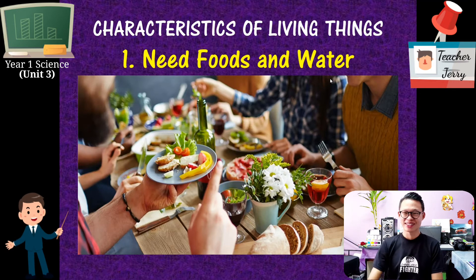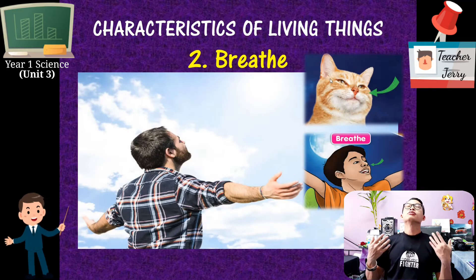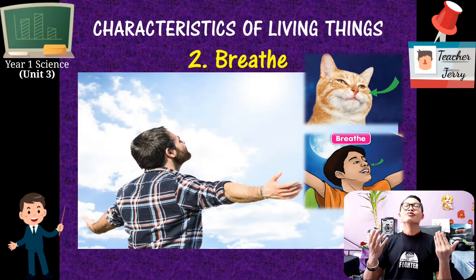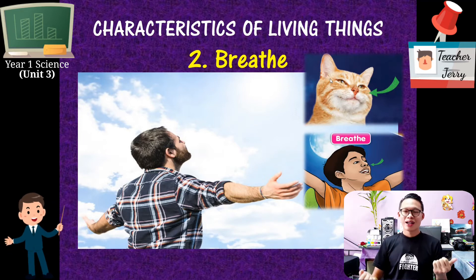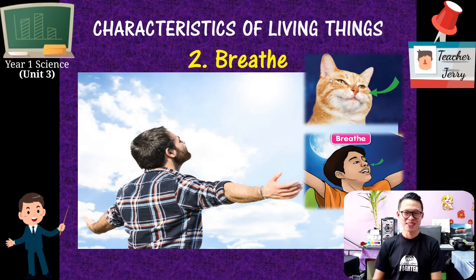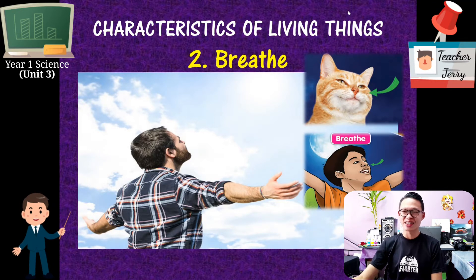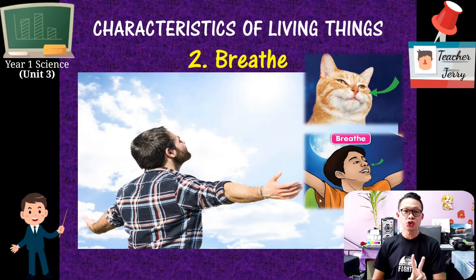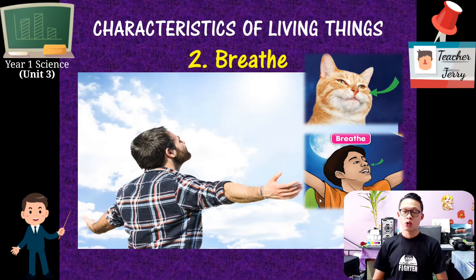The second characteristic of living things is we can breathe. All humans, animals, and plants can breathe. In Bahasa Melayu, 'semua kita boleh bernafas' — we can all breathe. So to repeat: the first characteristic is we need food and water, and the second one is we breathe.